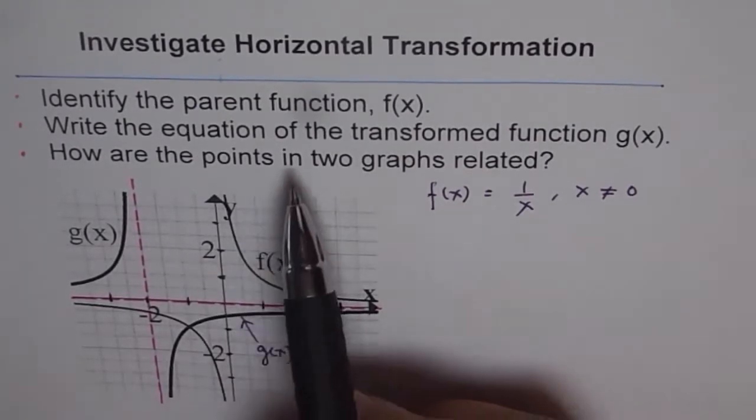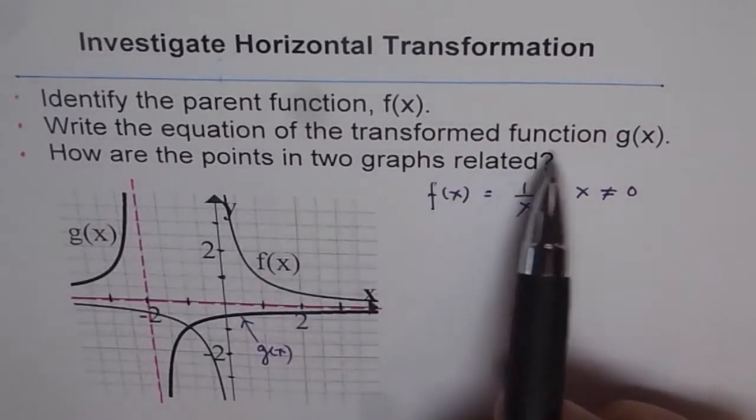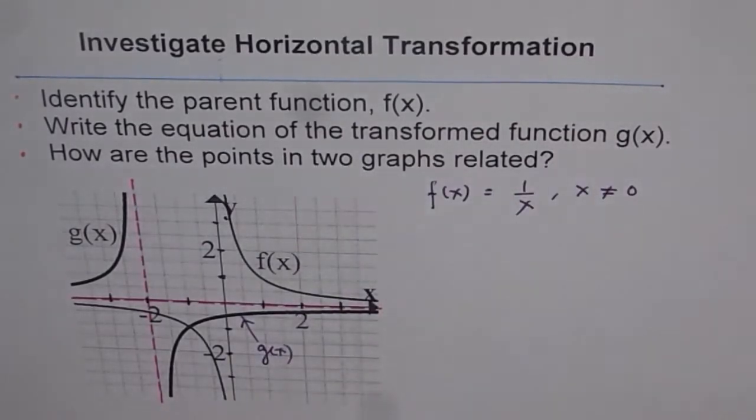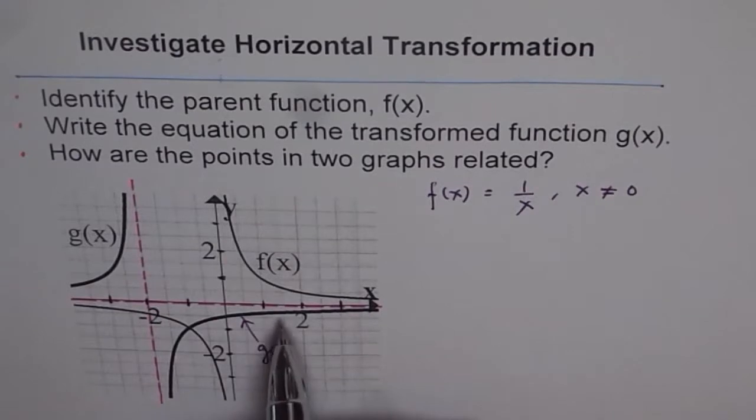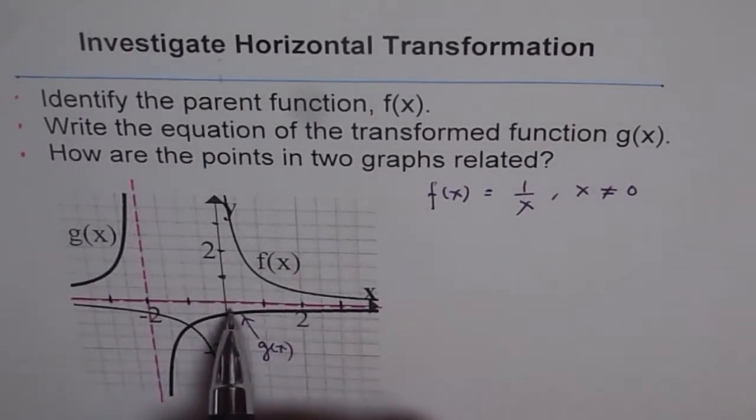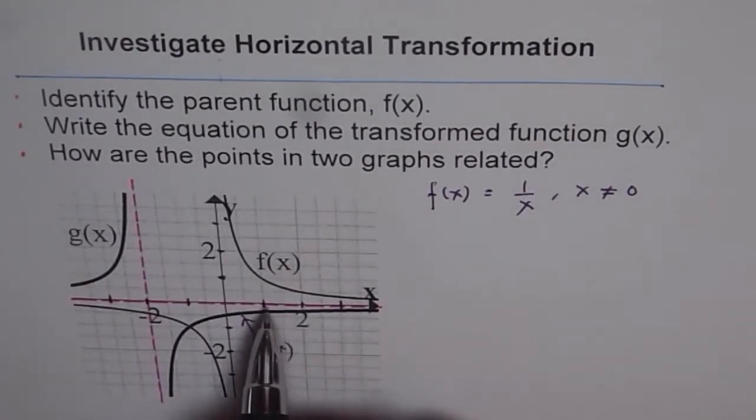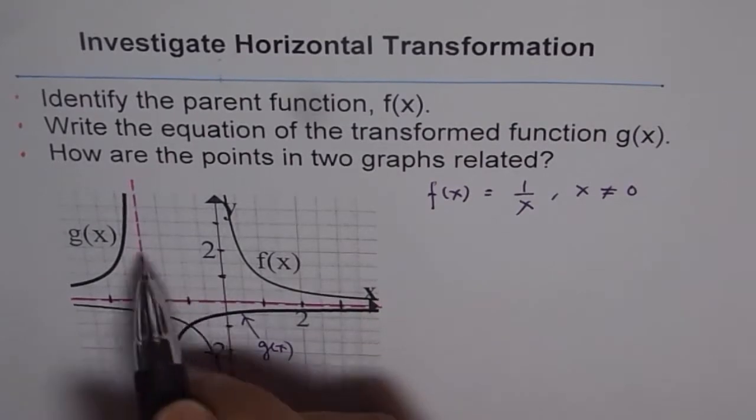Part two of this question is write the equation of the transform function g(x). So what do you notice? First thing which you notice is that the graph has really shifted. It is shifted and we have a vertical asymptote not at zero but at minus two.